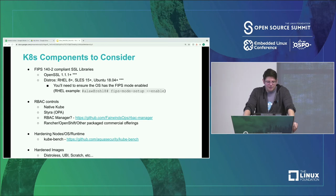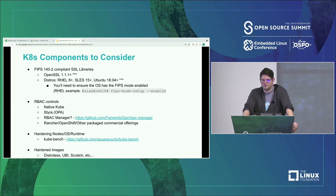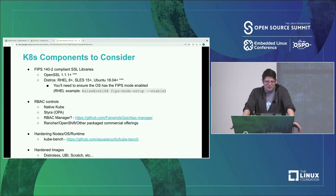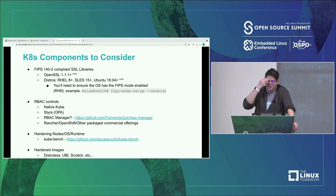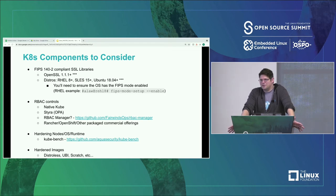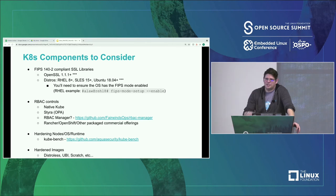Finally, using hardened images is important. Anybody can pull anything down from GitHub or public repositories. Using things like distroless images, UBI, or scratch images helps limit your security and risk profile against those different images. If you're building your own stuff, start with an image that is already secured or at least has a minimal profile — that helps eliminate vulnerabilities and other issues that could show up later.